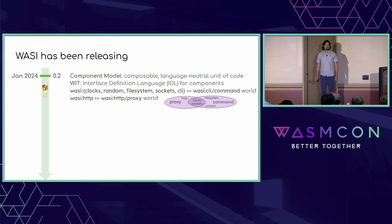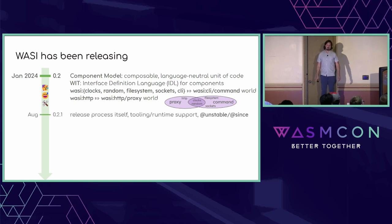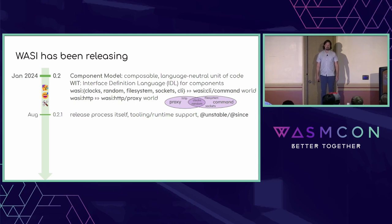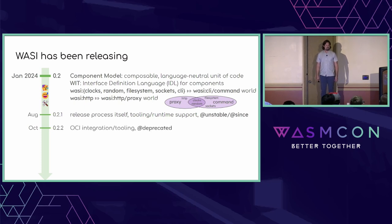We celebrated the 0.2 release, took a break, and got back to work. In August, we released 0.2.1. The big feature there was the release process itself and all the tooling and runtime support necessary to allow smooth minor releases. We also added a few features to WIT — the unstable and deprecated gates — to help control the rollout of new features. Two months later, we released 0.2.2, which added OCI integration, and also this third deprecated gate.